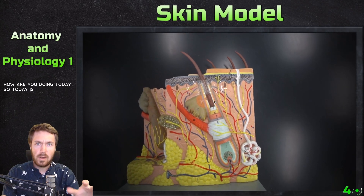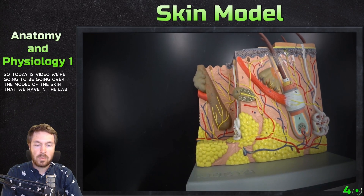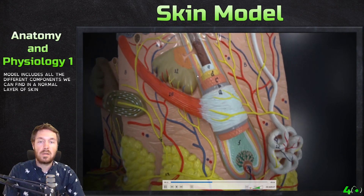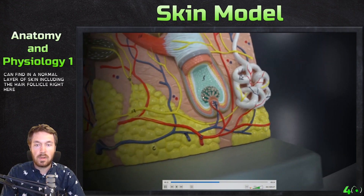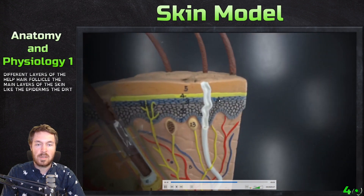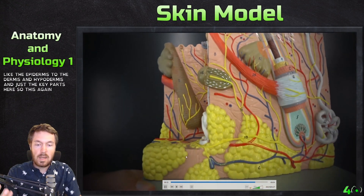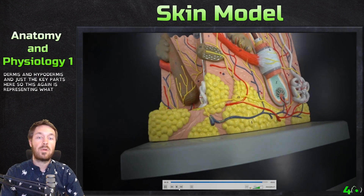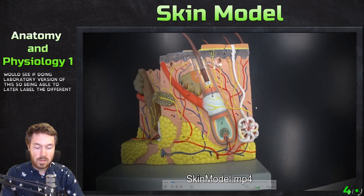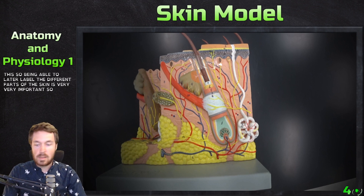Hello everyone! Today's video we're going to be going over the model of the skin that we have in the laboratory. The skin model includes all the different components we can find in a normal layer of skin, including the hair follicle. We're going to go into the different layers of the hair follicle, the main layers of the skin like the epidermis, the dermis, and the hypodermis. Being able to label the different parts of the skin is very important, so let's get right into this.